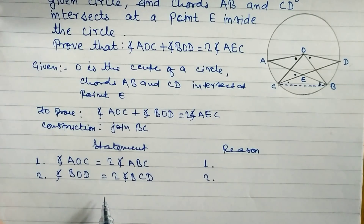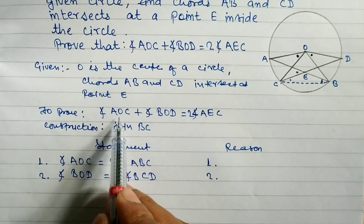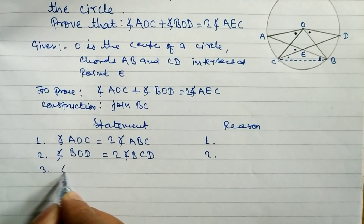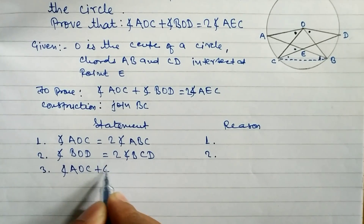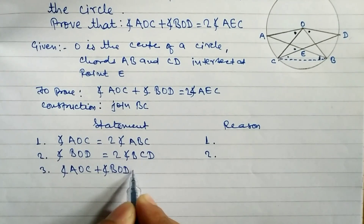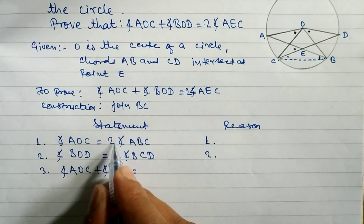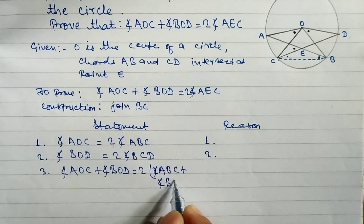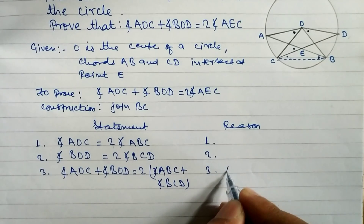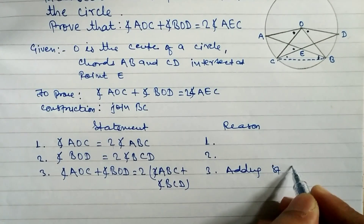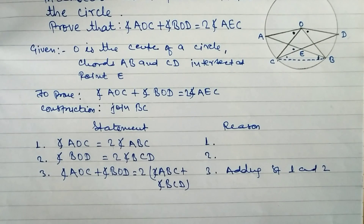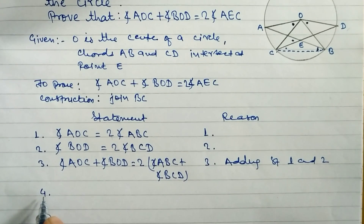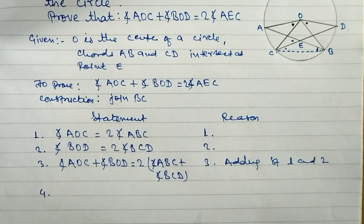In statement three, we add the two results. Adding statement one and statement two: angle AOC plus angle BOD equals two times angle ABC plus two times angle BCD. Taking two as common, we get: two times the quantity angle ABC plus angle BCD.